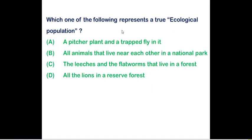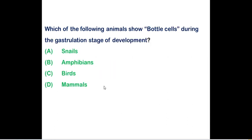Next, which of the following represents an ecological population? The correct answer is all lions in the reserve forest which is representing ecological population. Option A is representing individual. Option B is representing community level. And option C, that is leeches and the flatworm, two different species, they are speaking at species level. But here they are asking ecological population which is all lions in the reserve forest.